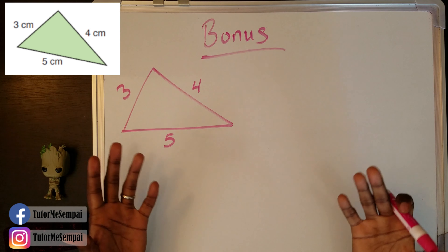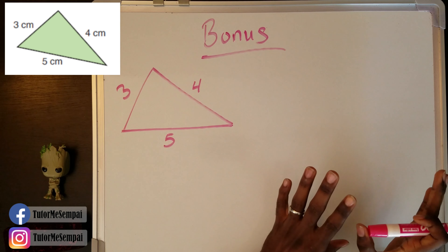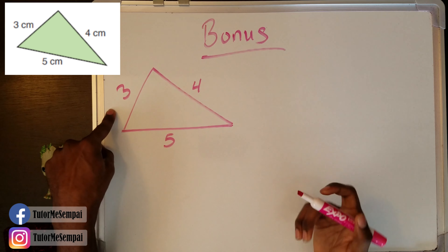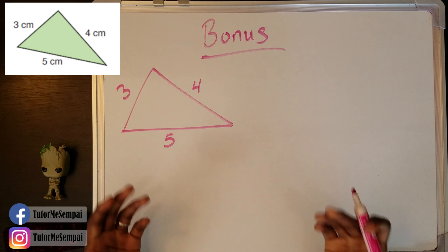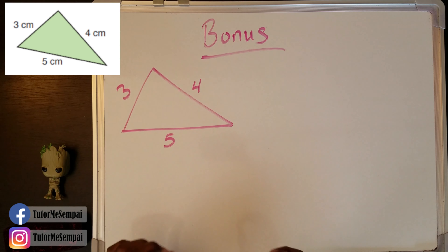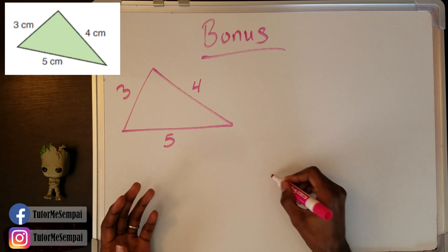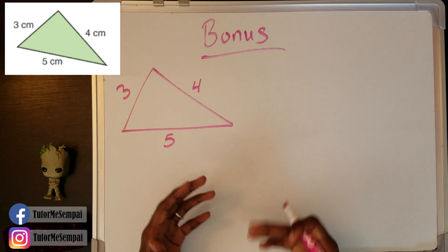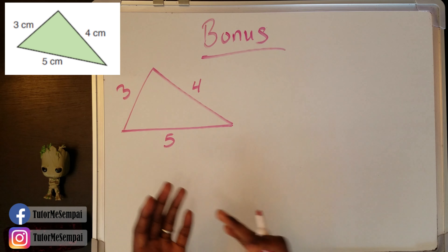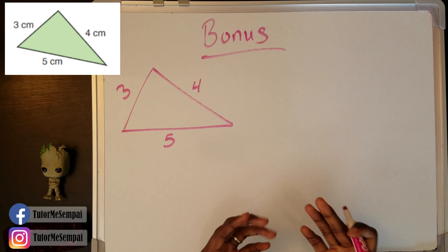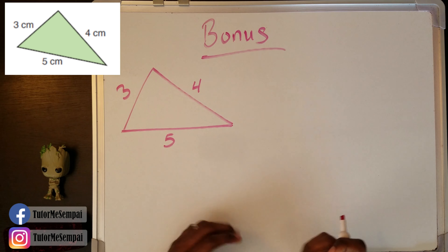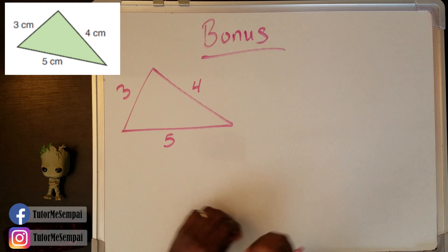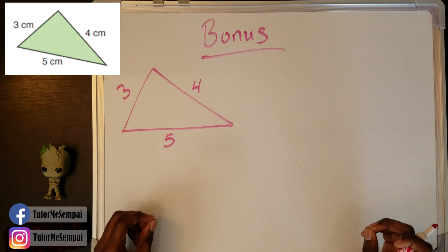I promised you a bonus scenario in which you can use the Pythagorean theorem without necessarily having a right triangle. Let's say you're given a triangle and you know all the sides — in this case, three, four, and five — but you don't know if it is a right triangle, although it looks like one. It doesn't have that box anywhere inside it. Well, we can use the Pythagorean theorem to help us identify this triangle as either being a right triangle or not. That's our secondary scenario.